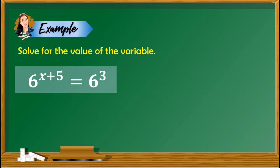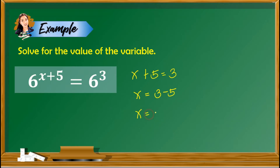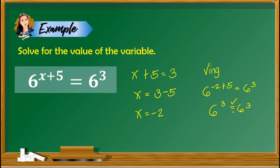Let us now have some examples. Solve for the value of the variable in the equation 6 raised to x plus 5 equals 6 raised to 3. As we can see, the bases are already the same, so we will simply ignore the bases and equate the exponents. So we have x plus 5 equals 3. Solving for x, we isolate x: x equals 3 minus 5, so x equals negative 2. To check, substitute into the original equation: 6 raised to negative 2 plus 5 equals 6 raised to 3, which simplifies to 6 raised to 3 equals 6 raised to 3. Since both sides are equal, x equals negative 2 is the answer.